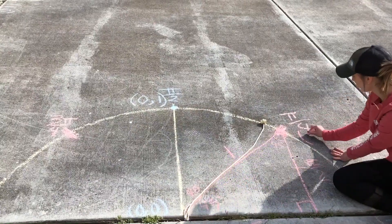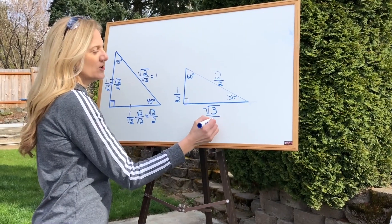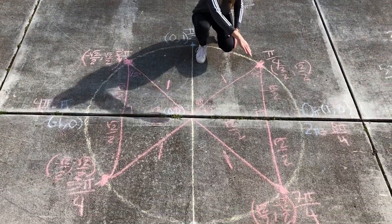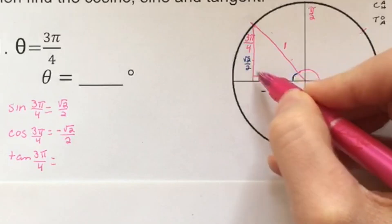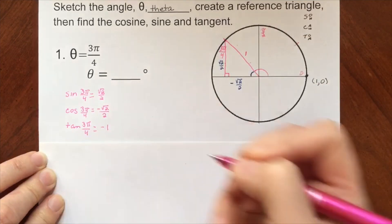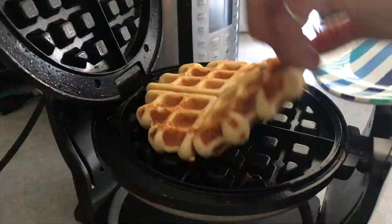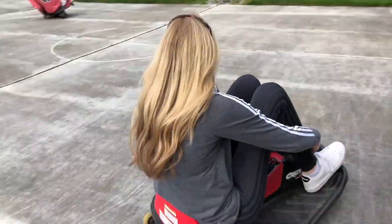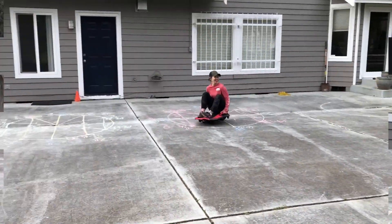Triangles, triangles everywhere. Triangles, triangles here and there. Triangles, unit circle, can't you see? What is sine, cosine, tangent to be? You won't lag behind because you've learned what you need. You'll pass the whole crew because you know trigonometry.